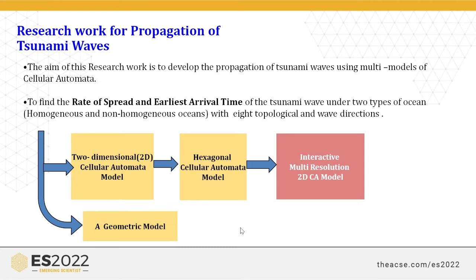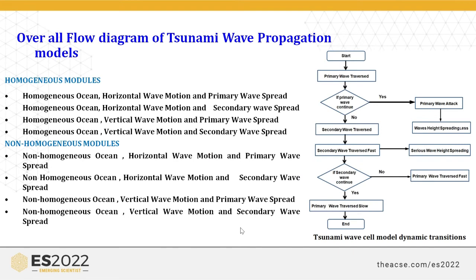We have completed different models: a two-dimensional cellular automata model, a hexagonal cellular automata model, an interactive multi-resolution 2D cellular automata model, and a geometrical model. The overflow diagram of the tsunami wave propagation model is based on eight topological conditions. It includes the primary wave, secondary wave, homogeneous, and horizontal and vertical wave motion.